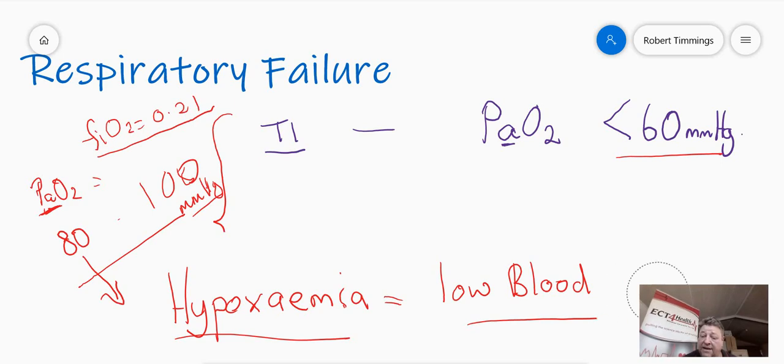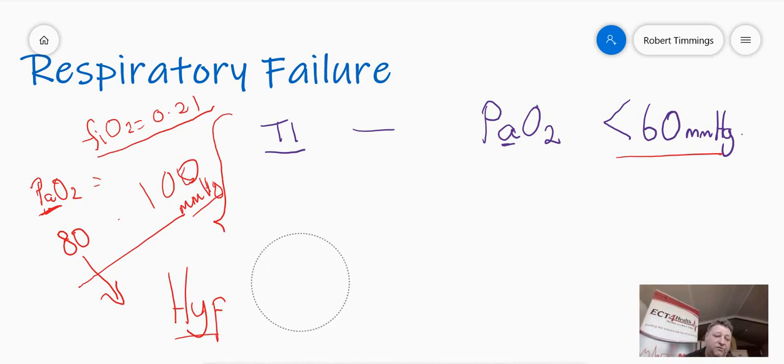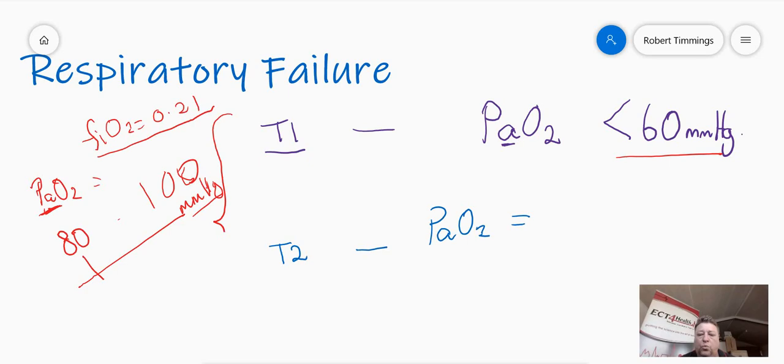So what's the other type of respiratory failure? I'm so glad you asked. The other type of respiratory failure is obviously called type 2 respiratory failure. And it meets the criteria for type 1. So I have to have a PaO2 which is less than 60 millimetres of mercury.